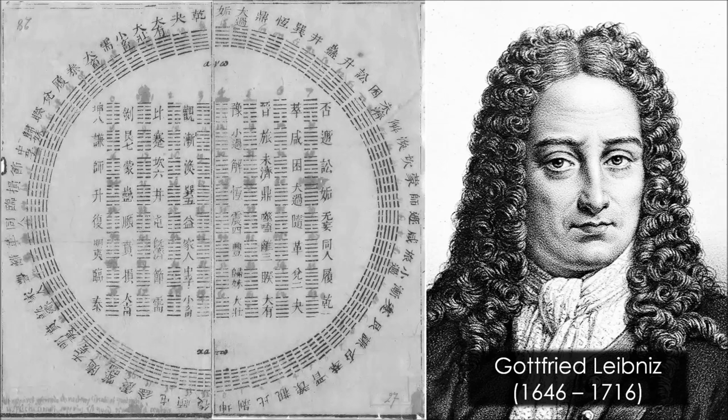A string of binary code yin and yang values set into a specific pattern creates an electromagnetic signal of sorts, representing a specific type of force in this universe that causes changes — alchemical transformations.